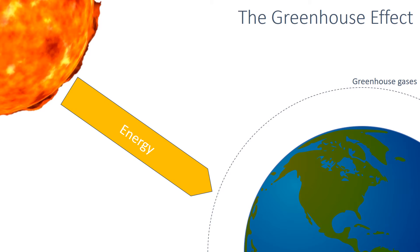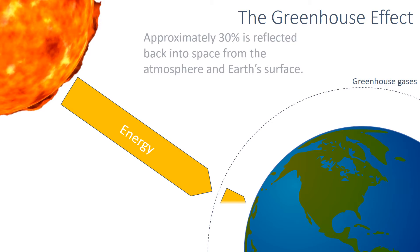The Sun emits energy, which heats the Earth. Not all of the energy produced by the Sun warms the planet. Approximately 30% is reflected back into space from the atmosphere and the Earth's surface.